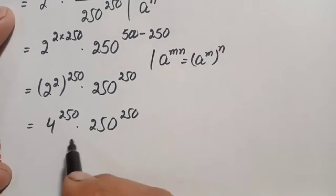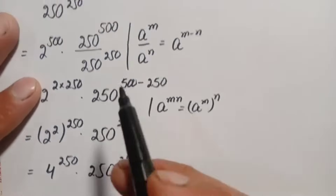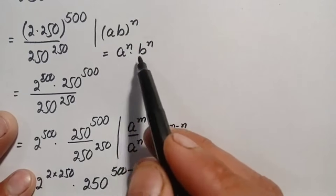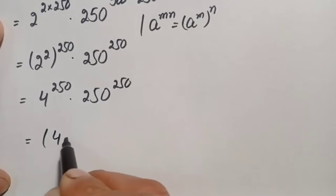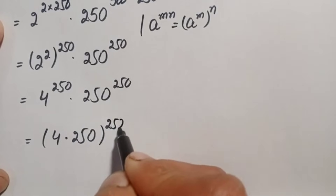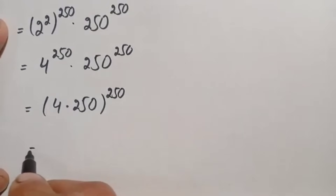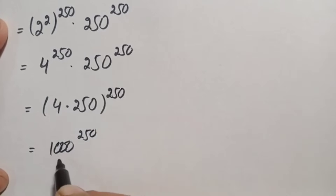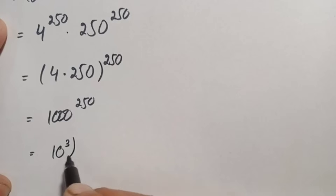Times 250 raised to power 250. These two numbers have the same power, so here we will use the same-power exponential identity and multiply the bases with each other. Using this identity, this will become 4 times 250 raised to the power 250. Now 4 times 250 is simply 1000, so this will become 1000 raised to power 250.